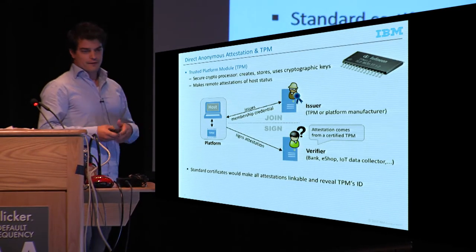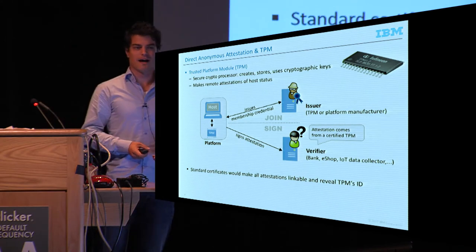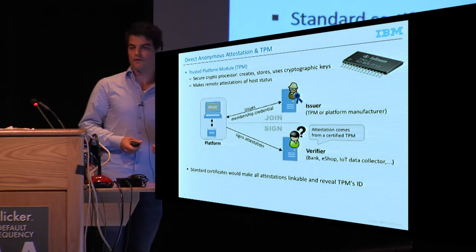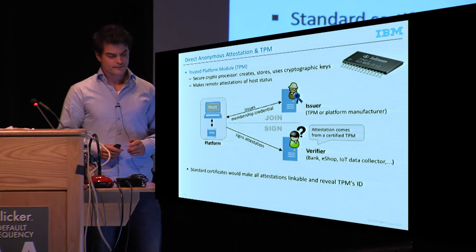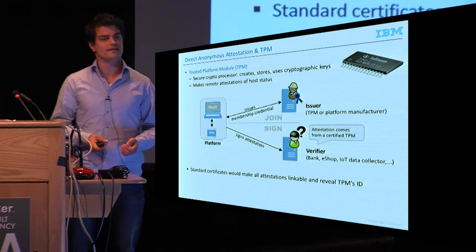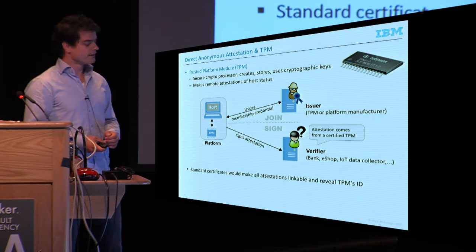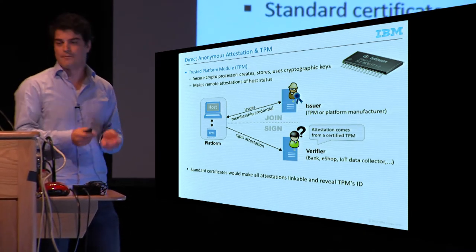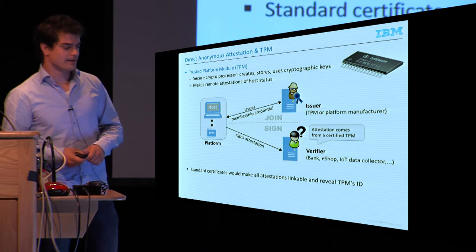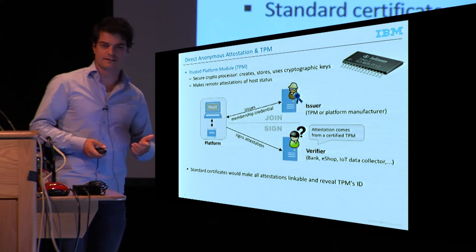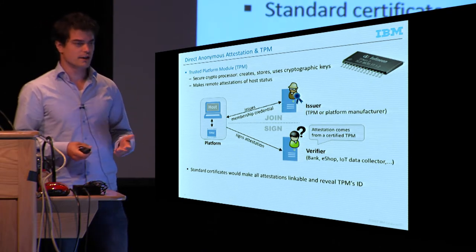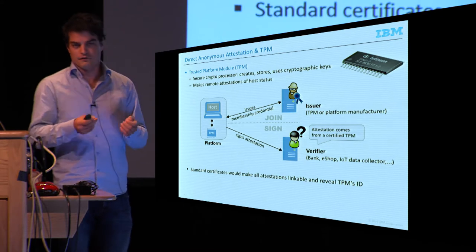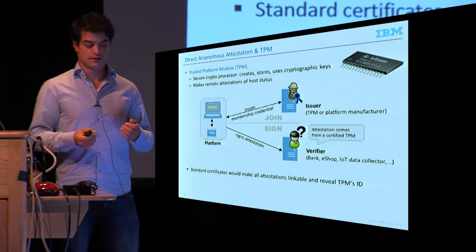If you look at a computer nowadays, then typically it has a TPM embedded in it — a trusted platform module. This is a tamper-resistant piece of hardware designed to create secure cryptographic keys, store them securely, and use them securely. It can also observe the state of the host system — the laptop in which the TPM is embedded. For example, during the boot sequence, the TPM can observe which software is being loaded, ending up with a report of which software the laptop started.